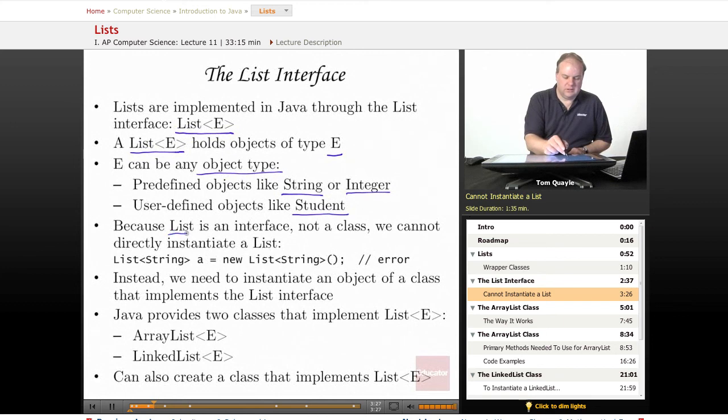Now, because List is an interface, not a class, we cannot directly instantiate a list. You cannot instantiate an interface. You have to have a class that implements that interface.